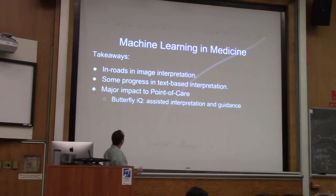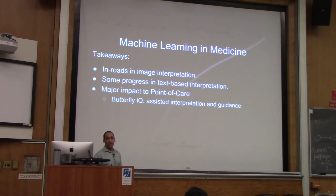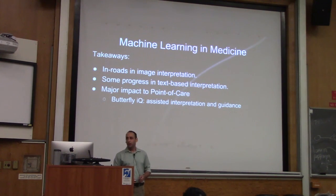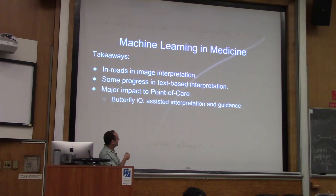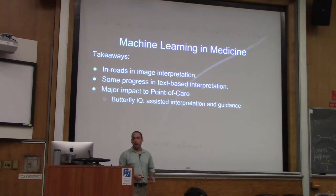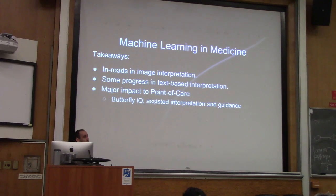The biggest impact and most natural inroads for machine learning have been in image analysis — traditionally radiology, but as we've seen in recent years, much of that has shifted into point of care. There's still progress in text-based interpretation, but that's still a little far away. The most exciting thing is really in point of care, and that's where Butterfly IQ is poised to make its impact. The addition of machine learning is one which I hope will make a much bigger change to how medicine is actually applied.